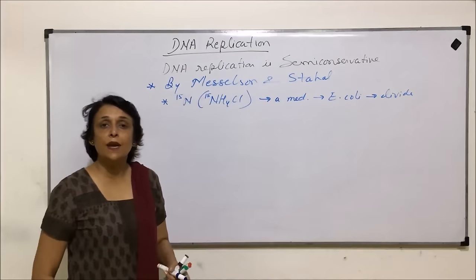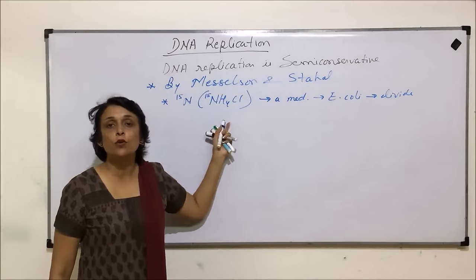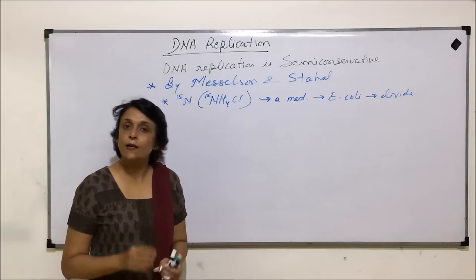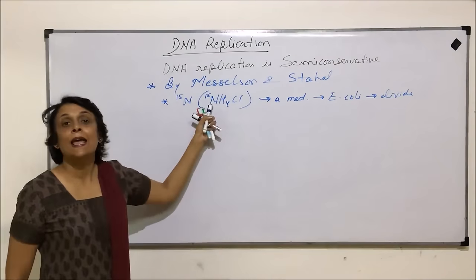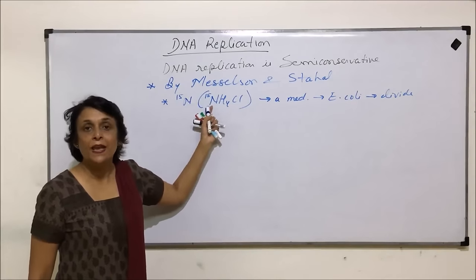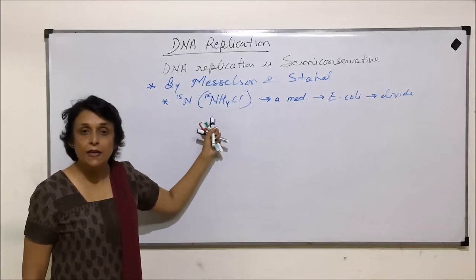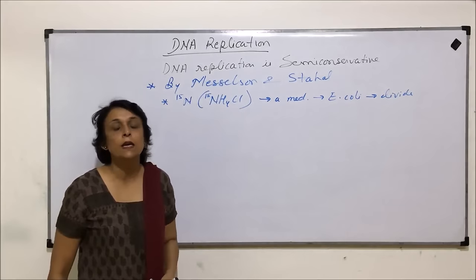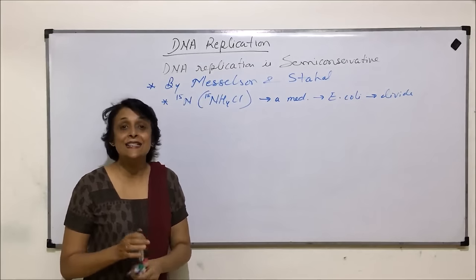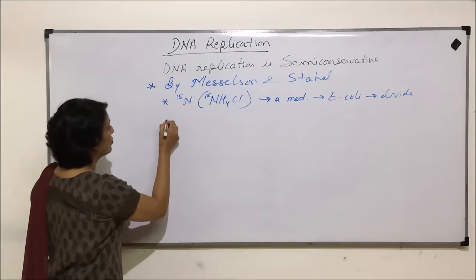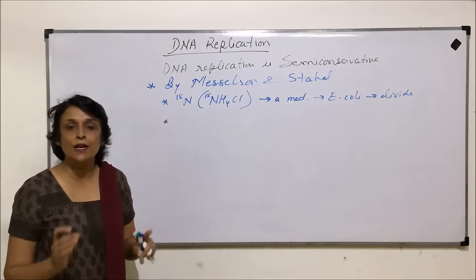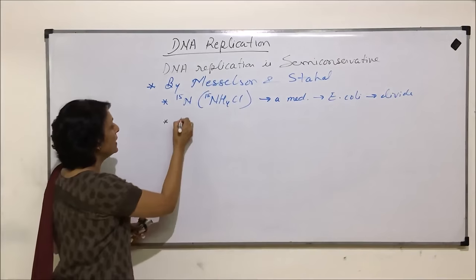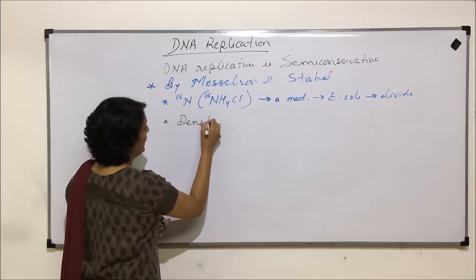Heavy nitrogen, that is N15, was provided in the form of NH4Cl (ammonium chloride), which was the source of nitrogen. When for many generations only N15 was given, the complete DNA in the new E. coli contained this heavy nitrogen. It is not radioactive — it is heavy. To separate it from normal nitrogen (N14), they used density gradient centrifugation.